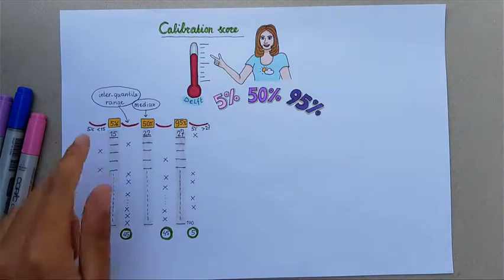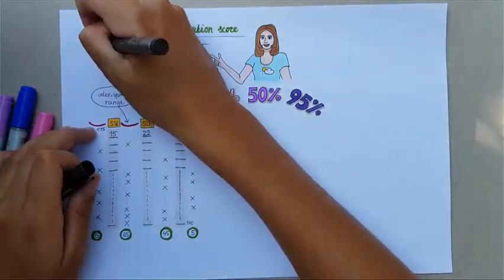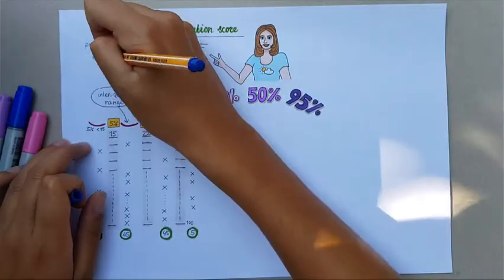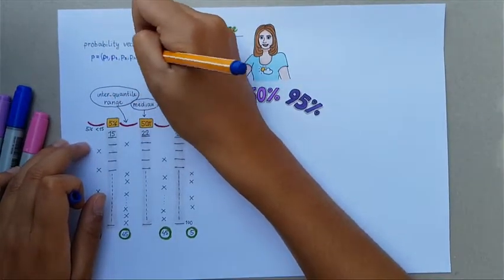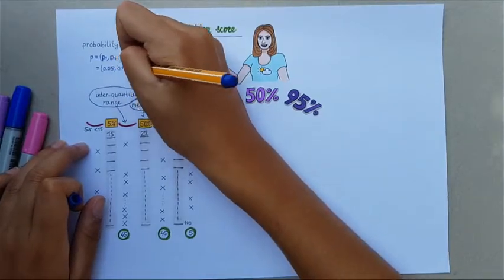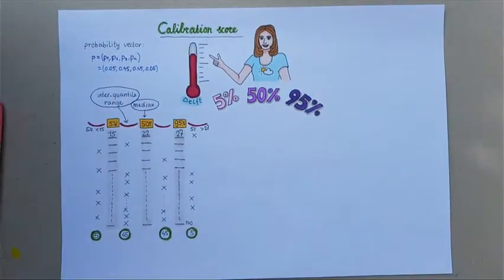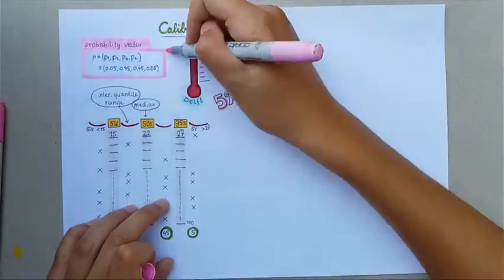This leads to the theoretical probability vector p, which is (p1, p2, p3, p4) equal to (0.05, 0.45, 0.45, 0.05), which gives the expected proportion of realizations in each interval.